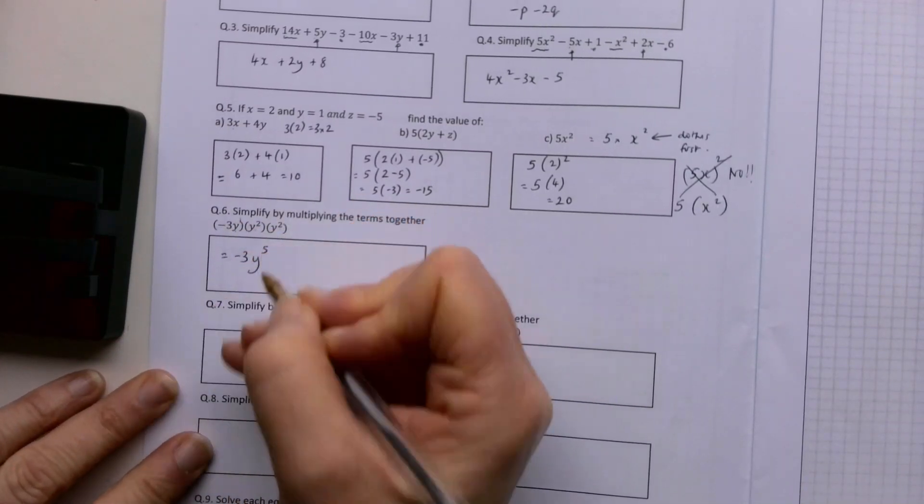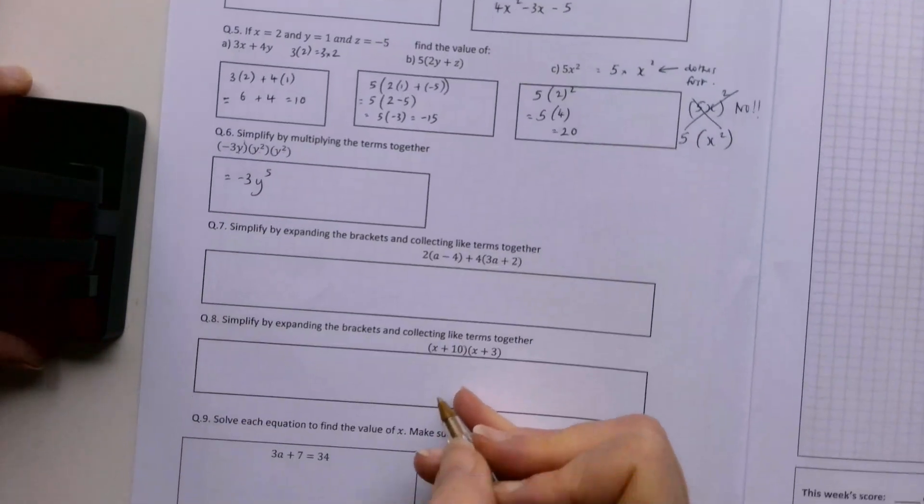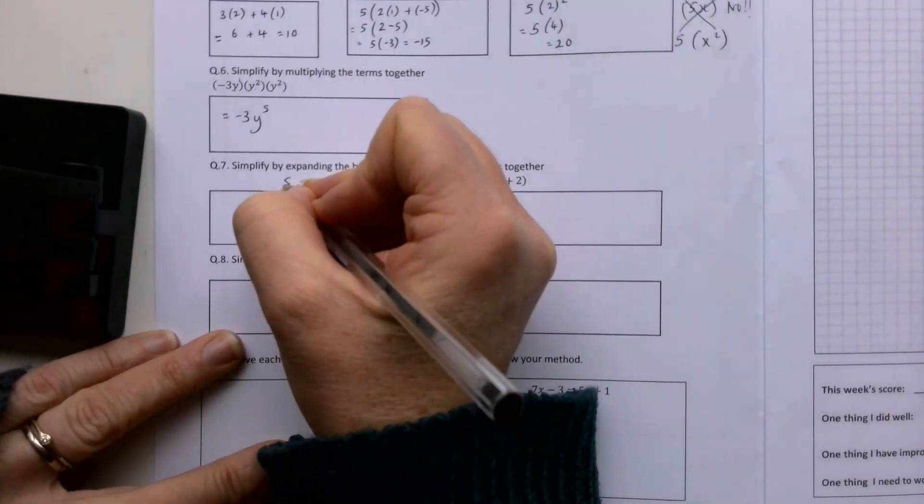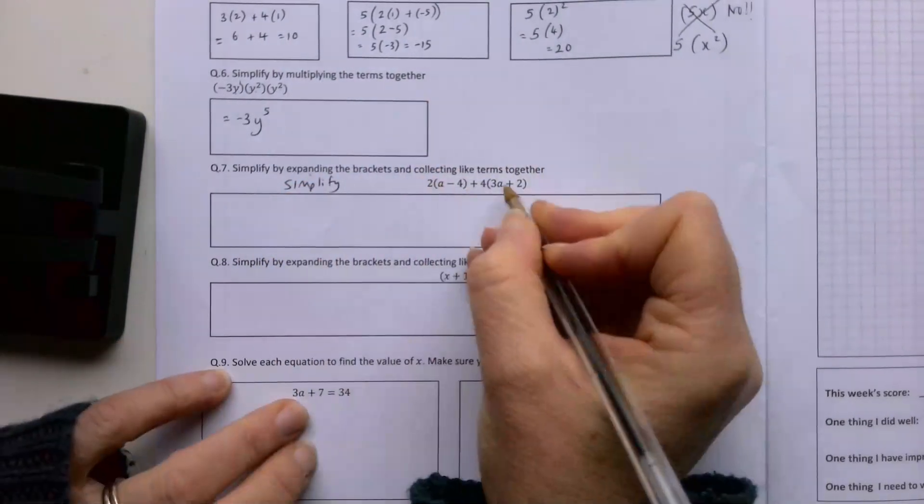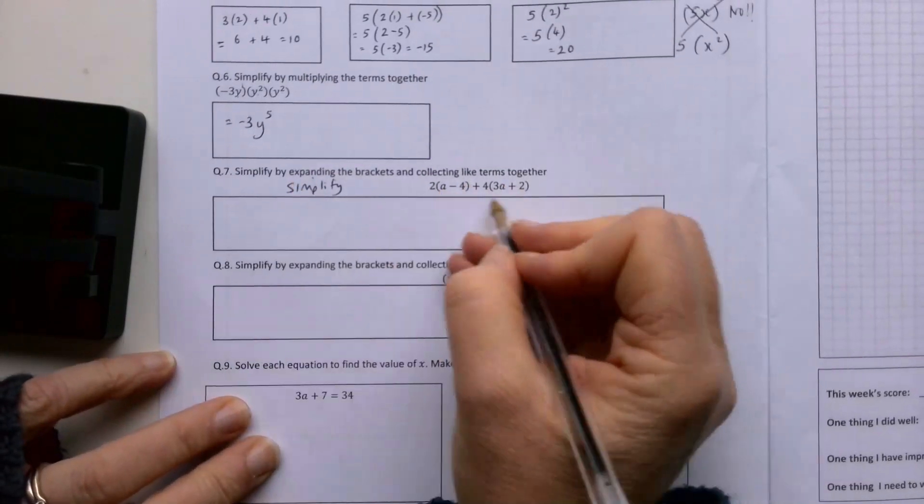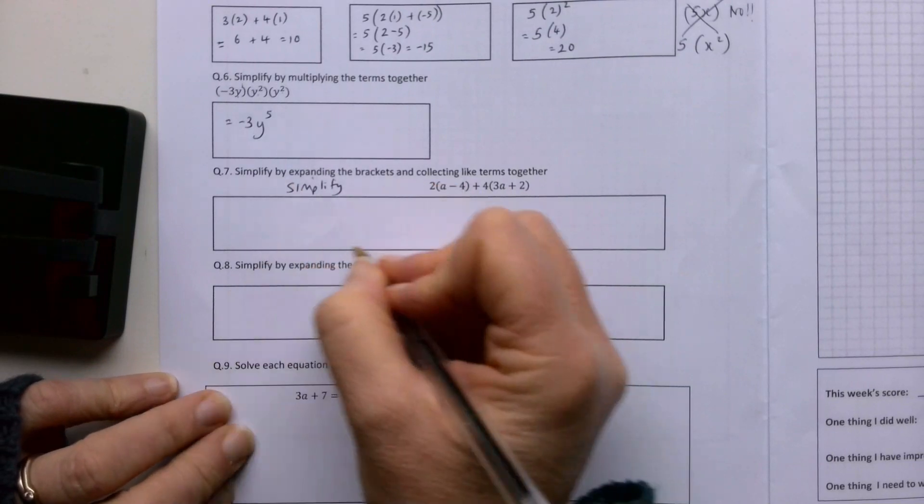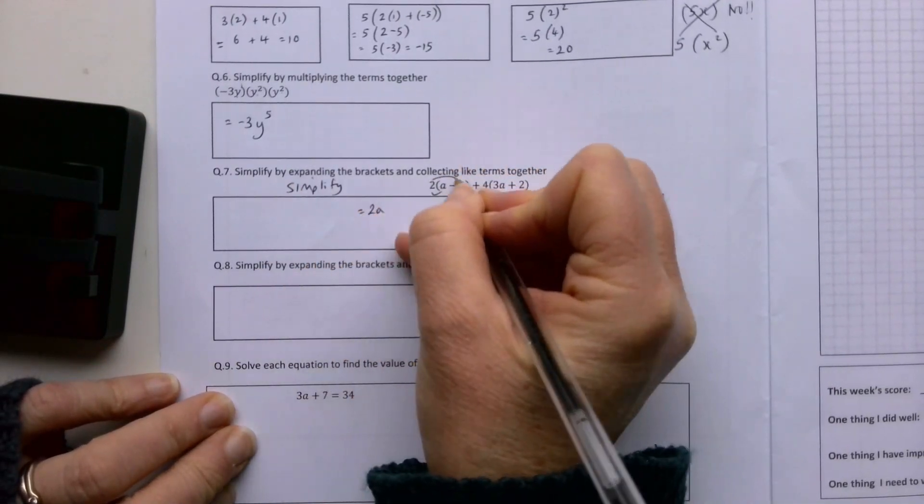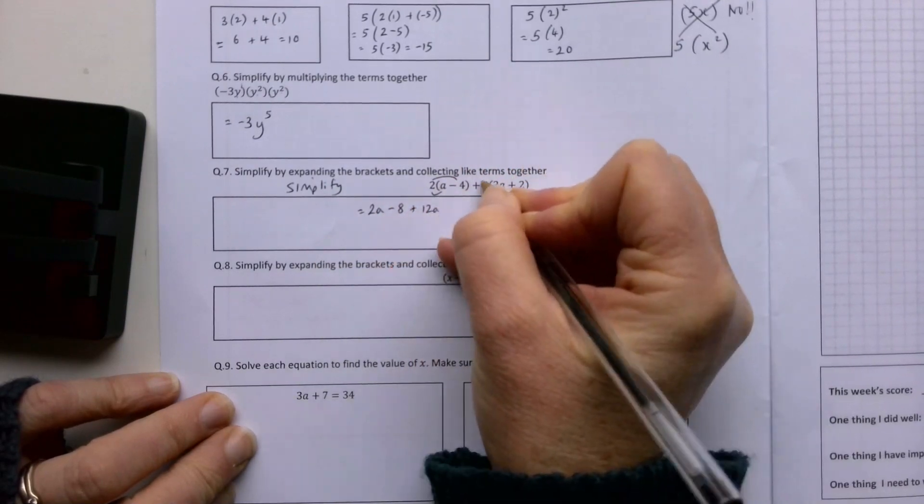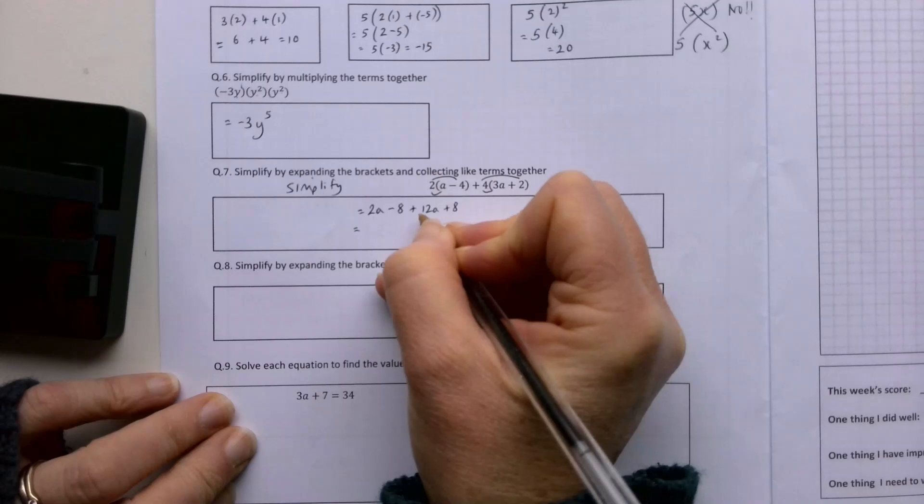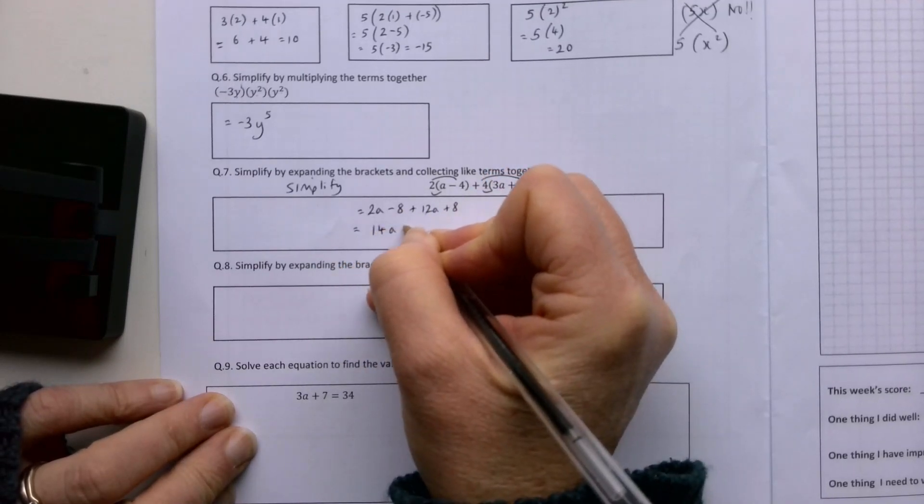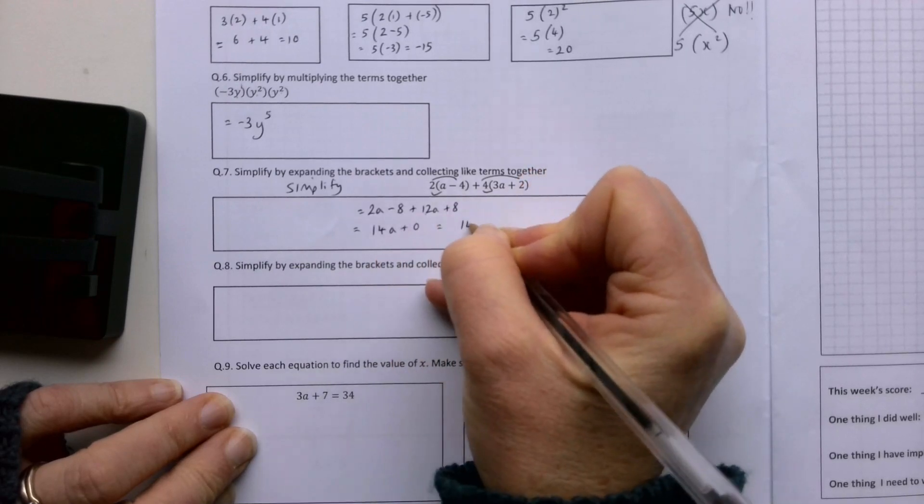Simplify by expanding the brackets and collecting the like terms together. In future it might just say simplify. So just get used to it - when you see brackets you need to multiply out. 2 by a is 2a, 2 by minus 4 is minus 8. 4 by 3a is 12a, 4 by 2 is 8. So I've got 2a plus 12a is 14a. Minus 8 plus 8 is 0, so it's just 14a.